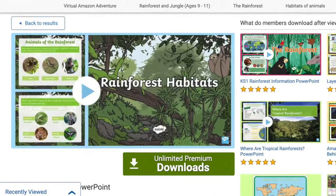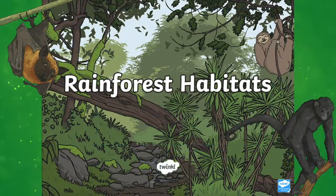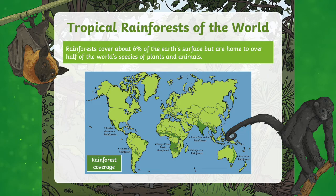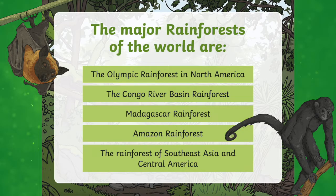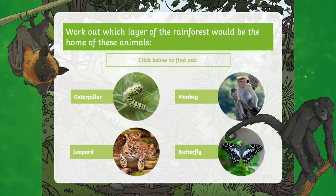Let's start with the Rainforest Habitat PowerPoint. This Rainforest Habitat PowerPoint aims to help you teach your class key facts and figures about rainforest ecosystems. This PowerPoint will help your children understand that rainforests have different layers and each layer provides a home to many different animals and plants.